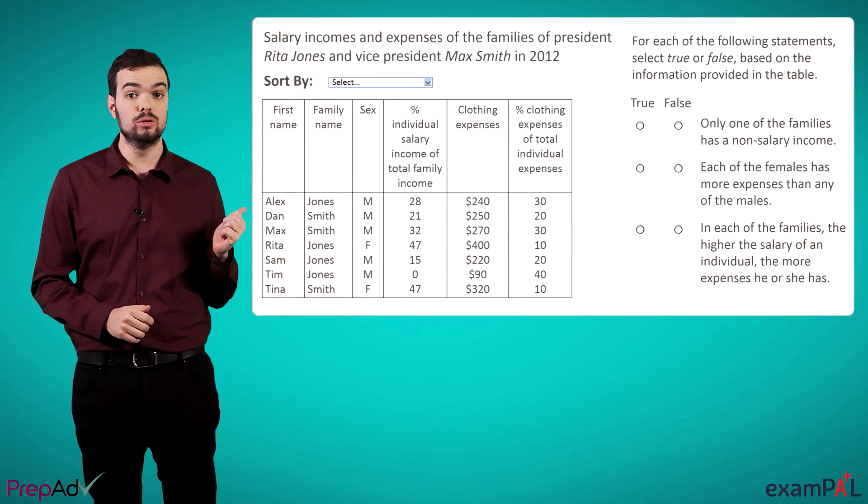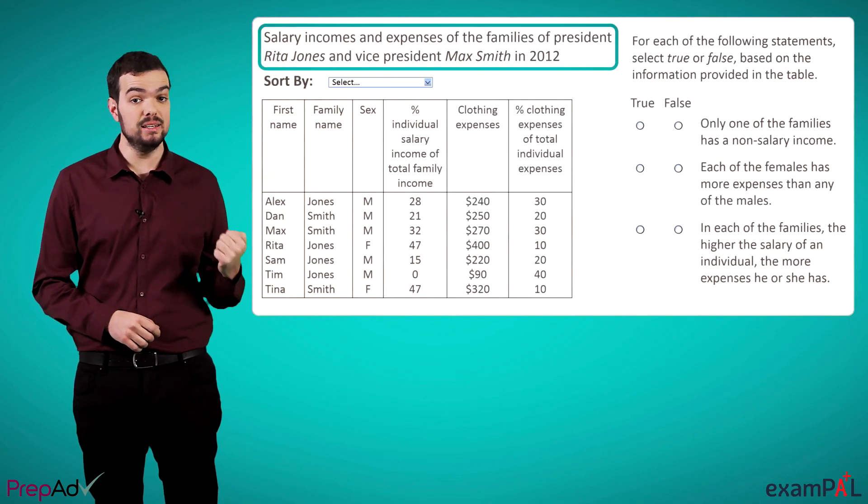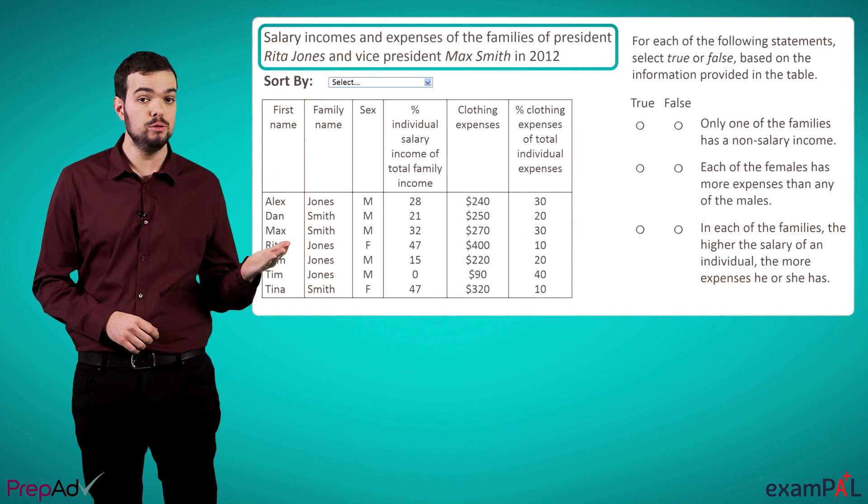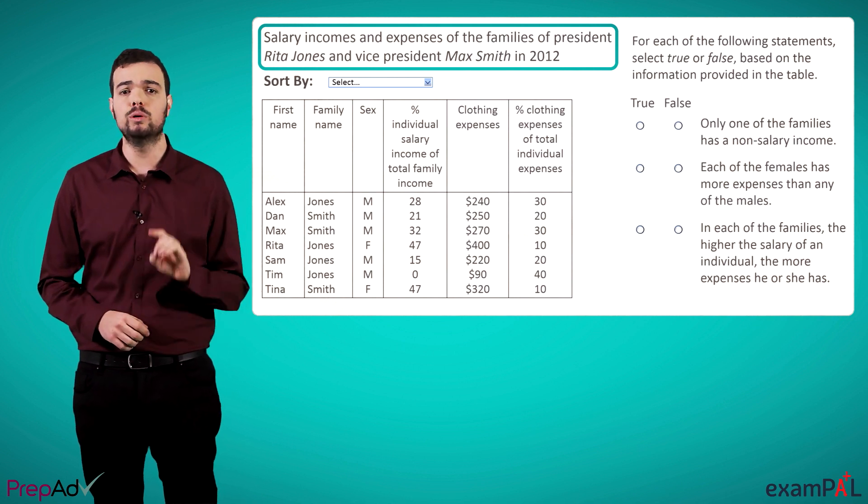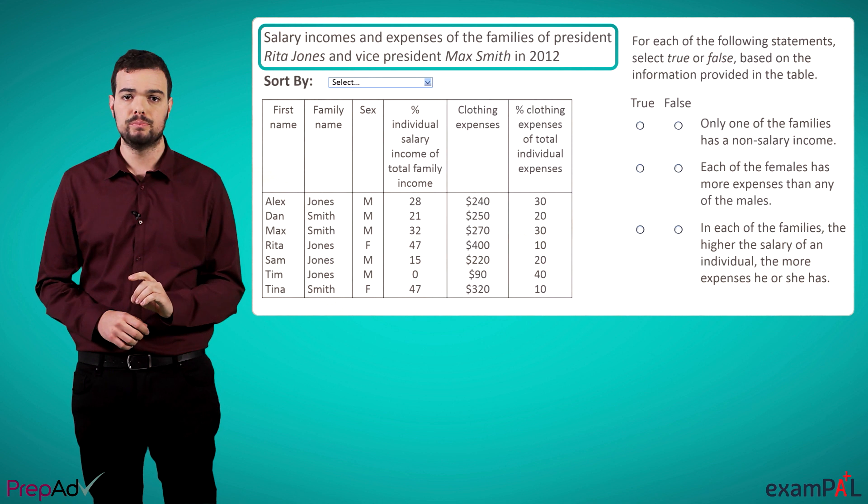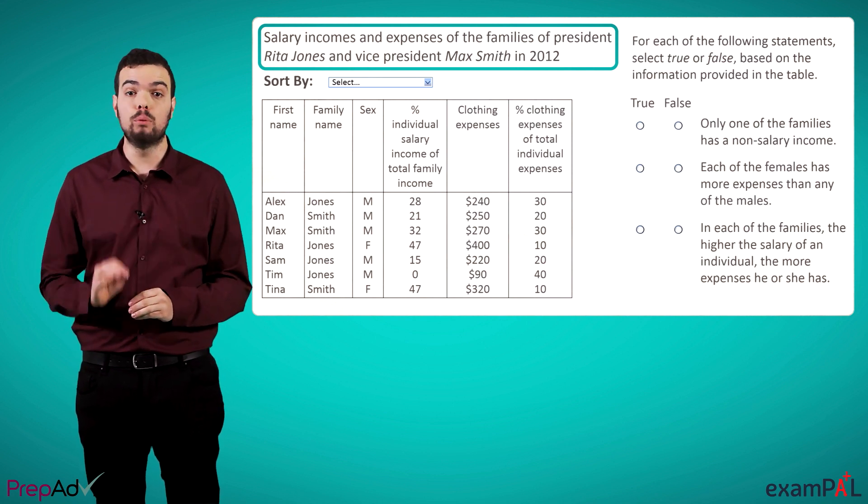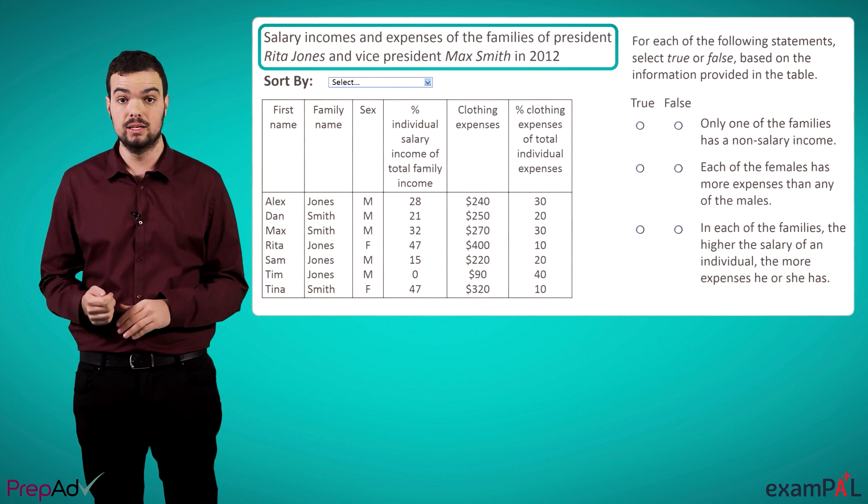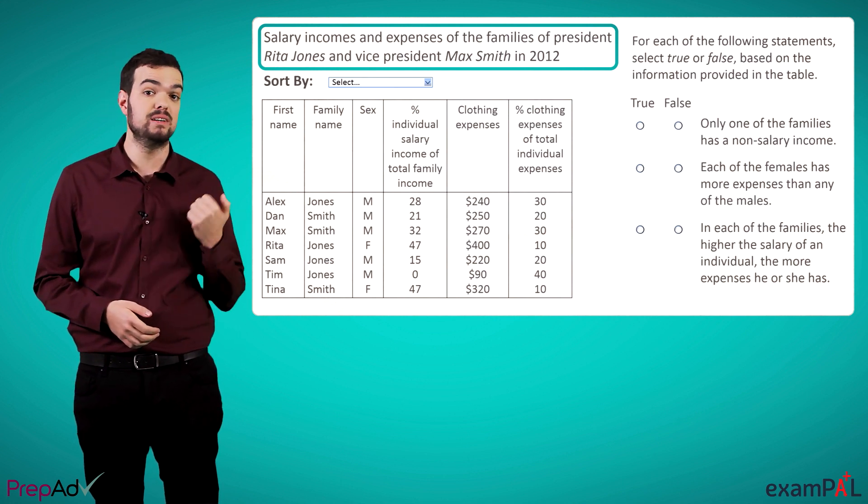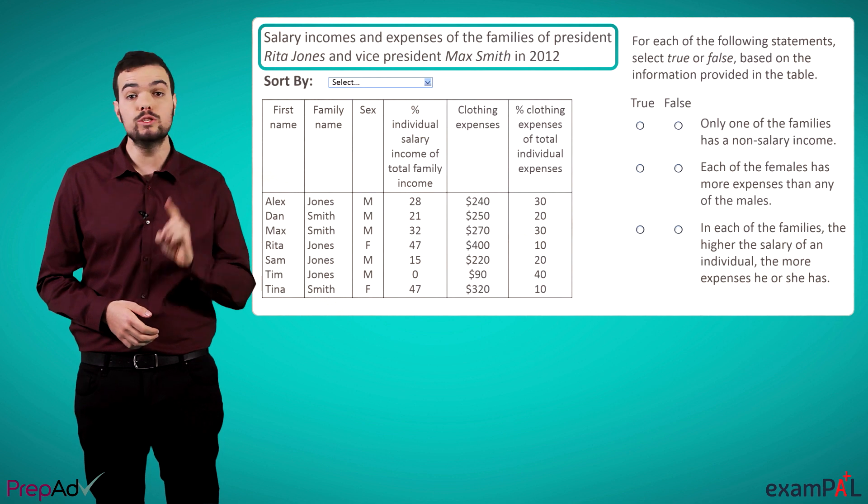In this type of question, we're presented with a data table summarizing information of some kind. The table will be headlined by a title. It's important to pay attention to the title, as it usually gives us important context as to what is being presented in the table. For example, in this table, the title both tells us the identities of the people mentioned in the table, family members of the president and vice president, and the year for which the table presents information. Note that it also gives us important additional information about the context, such as the entire families of the president and vice president are included, which can be quite important.